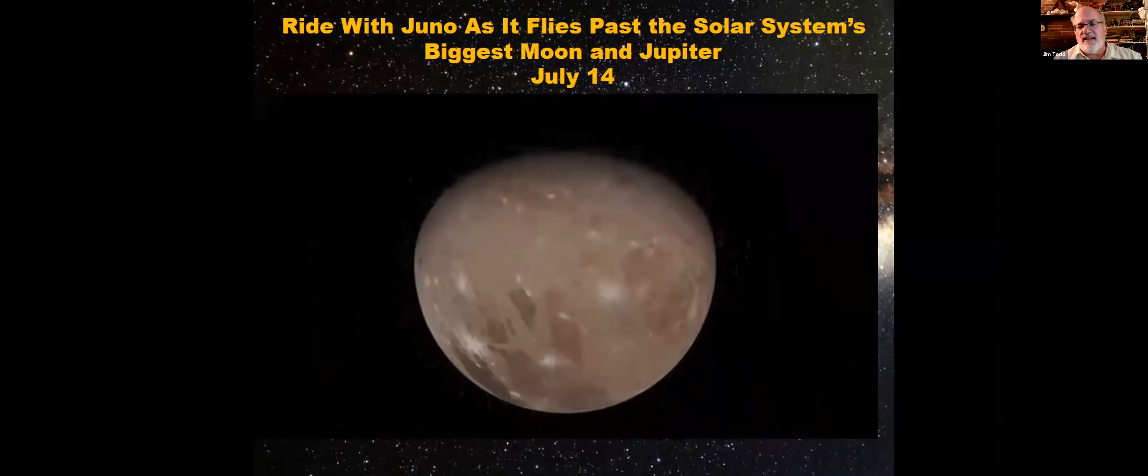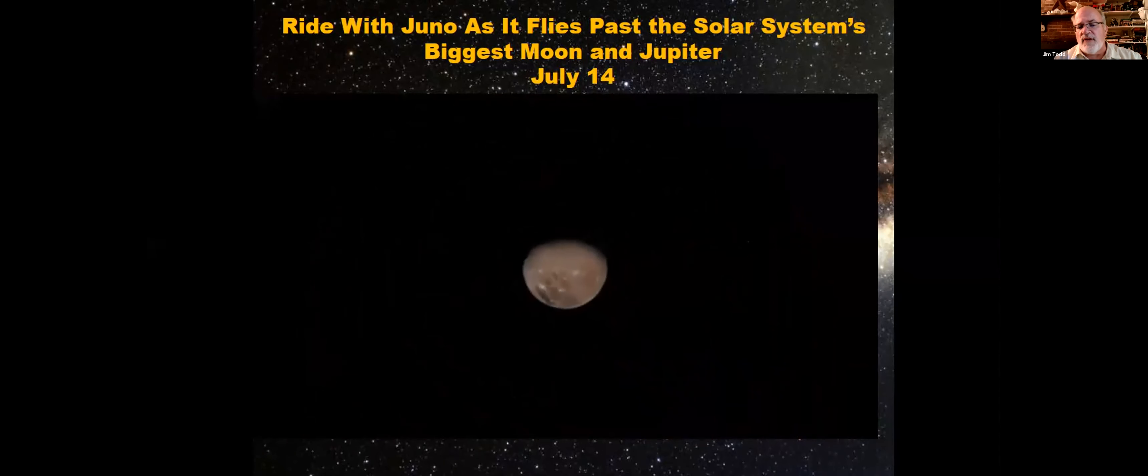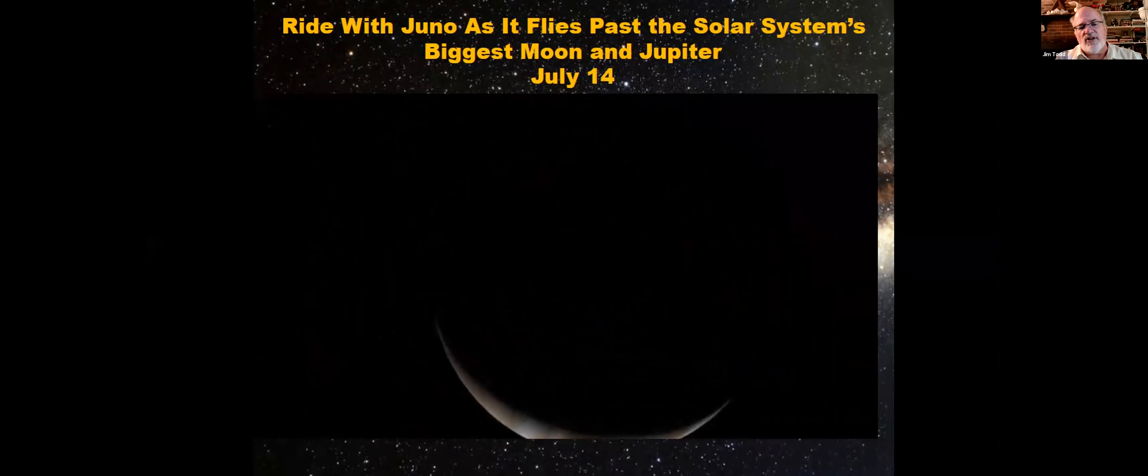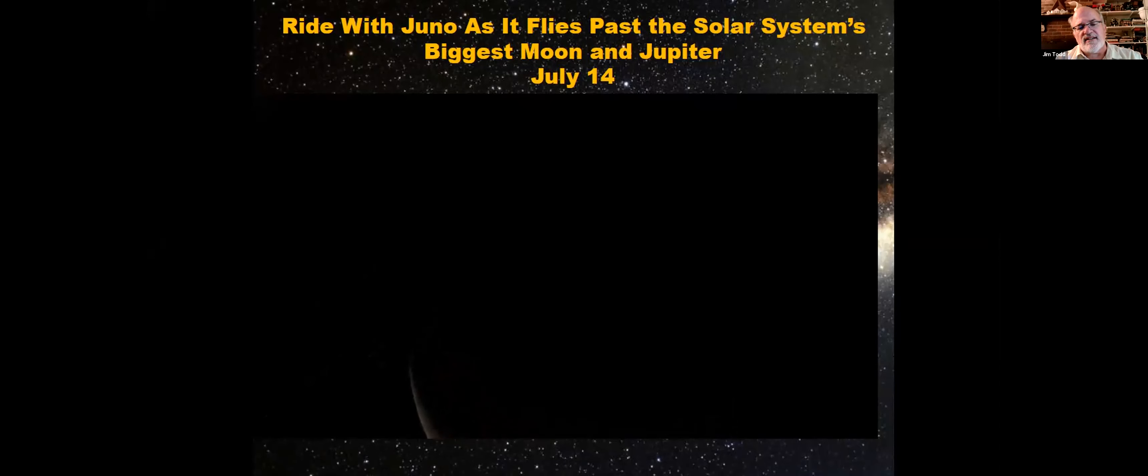This is actual footage from Juno making a close flyby of the largest moon in the solar system. It's pretty impressive. I'm hoping that this will come out for the planetarium. I could just see this on the planetarium dome. It's nice detail, lots of data. You see that Ganymede doesn't have any atmosphere, lots of craters, lots of details. But this is the fun part: you start backing away and then you realize how far Ganymede is from Jupiter.